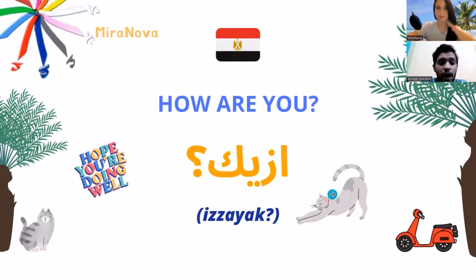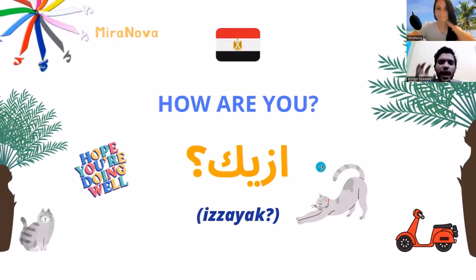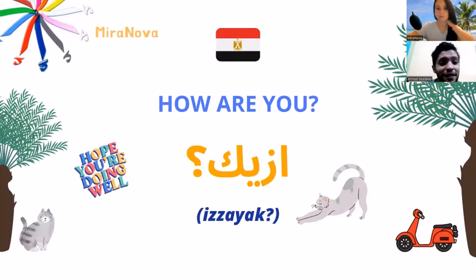How are you? Another way to say 'how are you' - we have a lot of options. Like in English you say 'how are you', 'what's up', 'how you doing'. In Arabic we say 'izzayak' and 'izzayik', and sometimes we use them together.